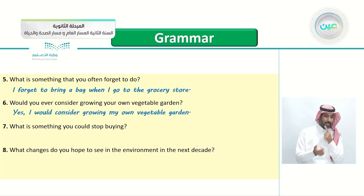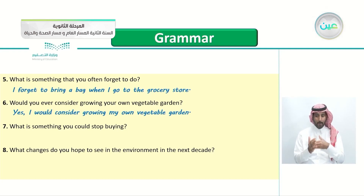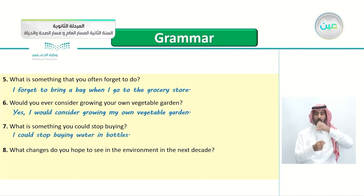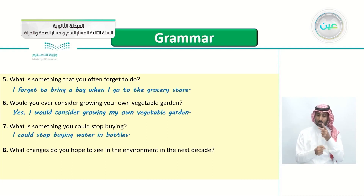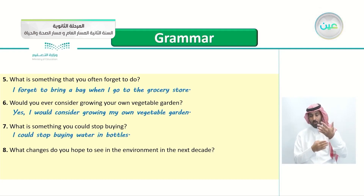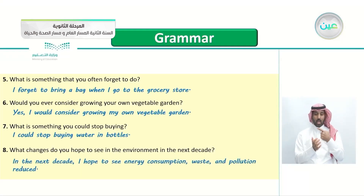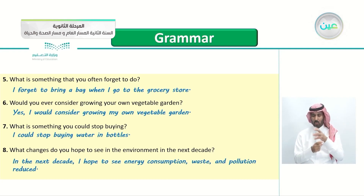Number 6: 'Would you ever consider growing your own vegetable garden?' Answer: Yes, I would consider growing my own vegetable garden. Number 7: 'What is something you could stop buying?' Answer: I could stop buying water in bottles. Number 8: 'What changes do you hope to see in the environment in the next decade?' Answer: In the next decade, I hope to see energy consumption, waste, and pollution reduced.